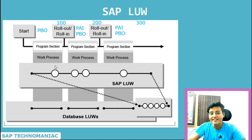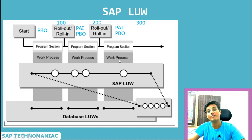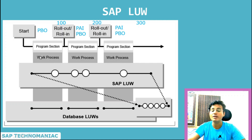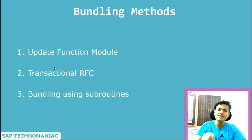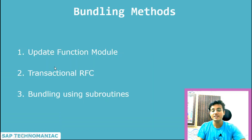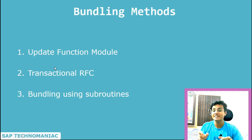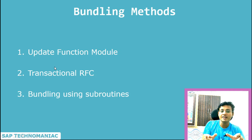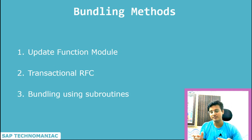So how do we collect these different changes across different screens? That is called the bundling technique. There are three kinds of bundling techniques: one is update function module, second is transactional reference, and third is bundling using subroutine.